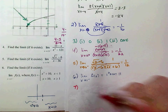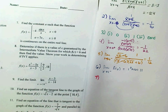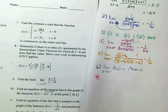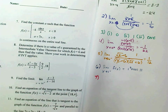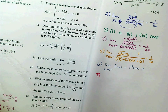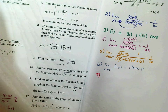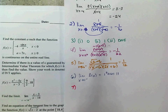Number 7: find the constant a such that the function is continuous on the entire real line.